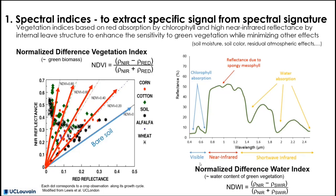Similarly, we can build a Normalized Difference Water Index (NDWI), which is based on the short-wave infrared spectral signature. Indeed, we can observe three water absorption peaks corresponding to different wavelengths. Based on this observation, the NDWI has been designed as a ratio of the difference between near-infrared and short-wave infrared over the sum of both. This index provides information on the water content of green vegetation.